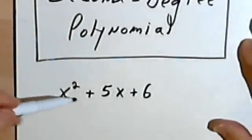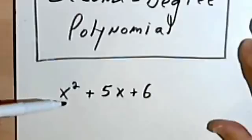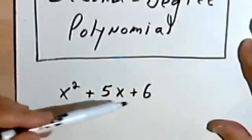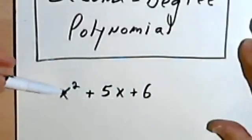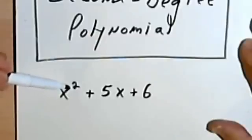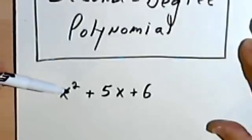First of all, this is what we mean when we say a second-degree polynomial. It's a polynomial, specifically a trinomial, and the largest exponent is a 2, so that means the polynomial has a degree of 2, or it's a second-degree polynomial.